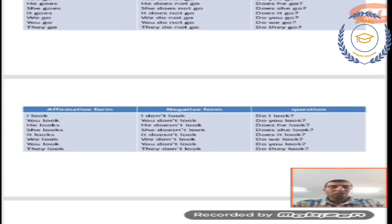Affirmative form with verb to look. I look, you look, he looks, she looks, it looks. We look, you look, they look. What you observe again: S is added to verb after he, she, it, third person singular.